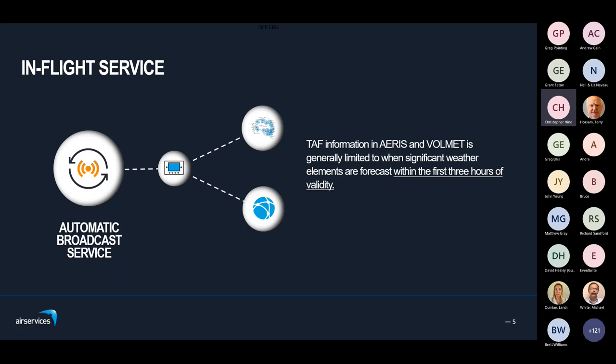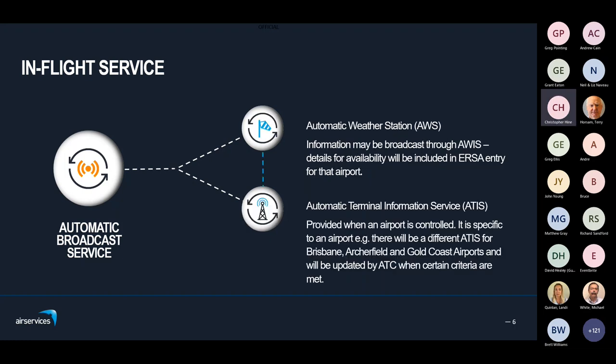With these two services, TAF information is generally limited to when there are significant weather elements within the first three hours of validity — keeping transmissions down so if you miss it you don't have to listen too long for it to come back around. We also have automatic weather stations and the ATIS. The ATIS is provided at controlled aerodromes — each airport has its own specific ATIS. In the southeast corner of Queensland with several airports close together, the ATIS for Archerfield will be different to Brisbane's, and when Archerfield goes home it will have its own Zulu ATIS broadcast while Brisbane's continues.